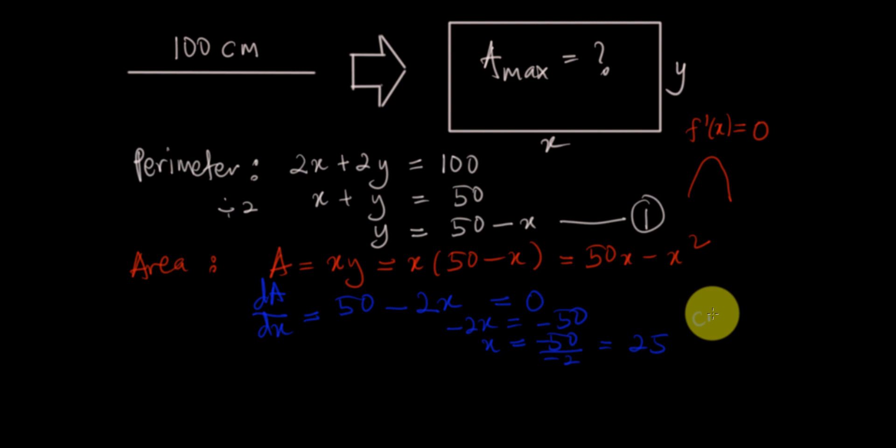You only have one critical point, so now we need to draw the table x and A. One of the values is 25. You have two more values, the end points. So the smallest possible x is 0 and the maximum is 50.